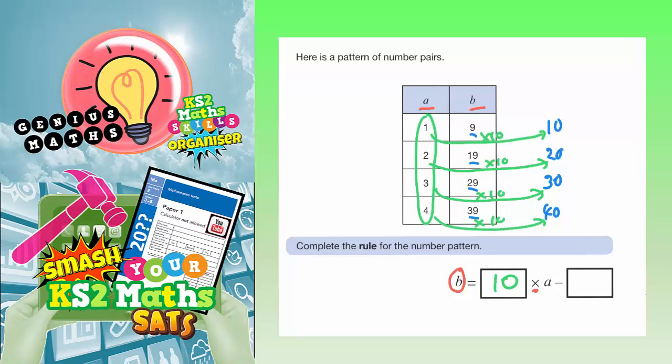But once we've times them all by 10, we get these numbers. But to get from these numbers to the actual numbers, which are where B is here, we've then got to take away 1.